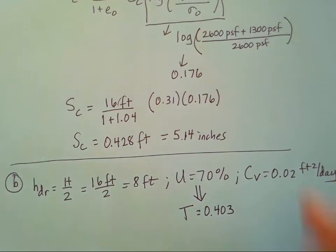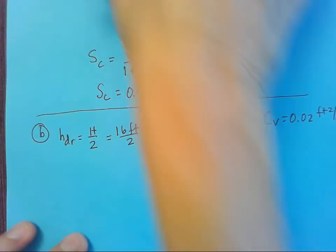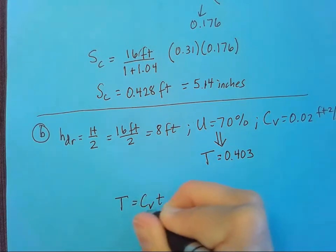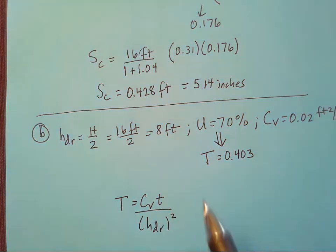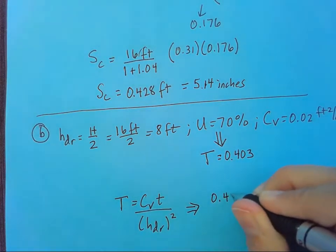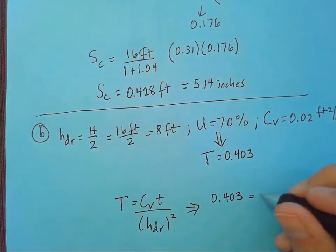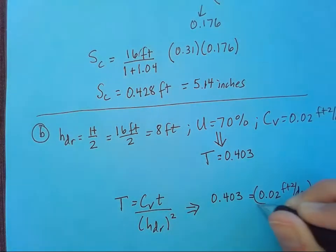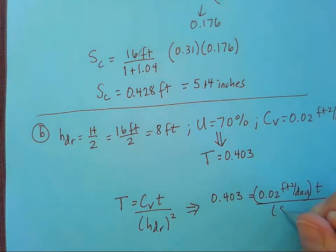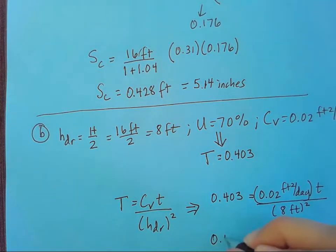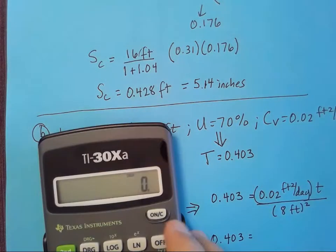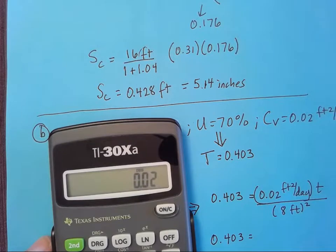I'm going to use the formula that's right on the bottom of this page. T equals CV times little t over HDR squared. This time I'm going to go ahead and solve for t. I'll just plug the numbers in to show you what that would look like. So I have 0.403 for T. Remember that's dimensionless. I have 0.02 feet squared per day for my CV. I don't know what my little t is. That's what I'm trying to find. And my HDR is eight feet. And I have to square that whole thing.